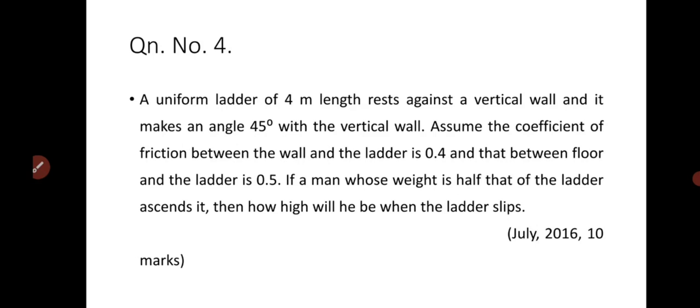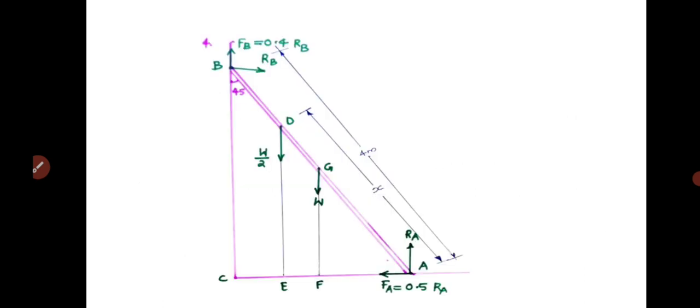Next question: A uniform ladder of 4 metre length rests against a vertical wall and makes an angle of 45 degrees with the vertical. Assume the coefficient of friction between wall and ladder is 0.4 and that between floor and ladder is 0.5. If a man whose weight is half that of the ladder ascends it, how high will he be when the ladder slips? This was also a previous year university question from 2016, asked for 10 marks.